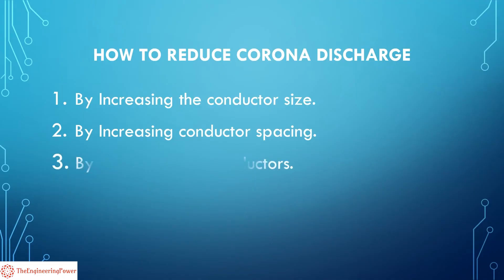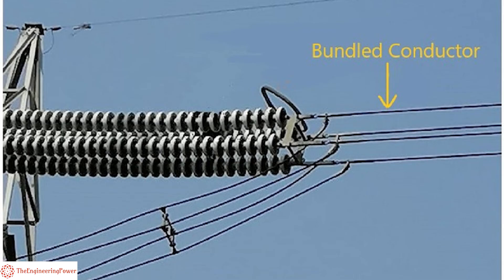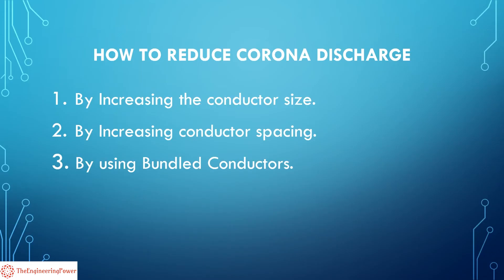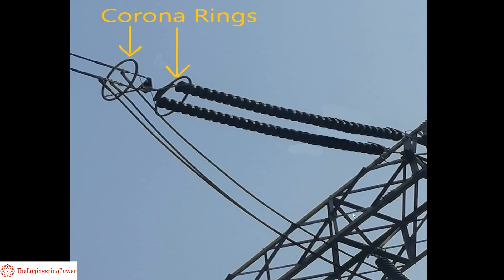The next method is the use of bundled conductors. With bundled conductors, the effective diameter of the conductor is increased, resulting in low corona loss. That is one of the main reasons behind the use of bundle conductors on high voltage transmission lines.